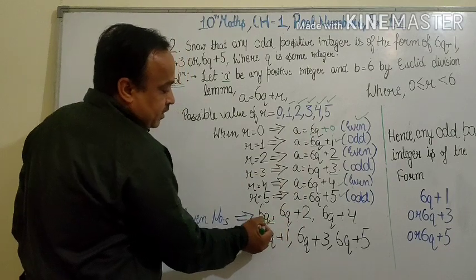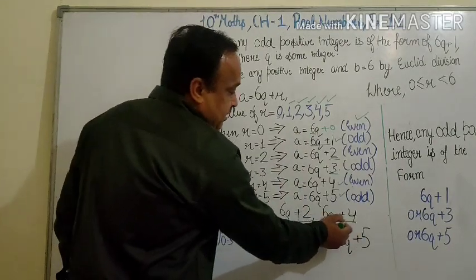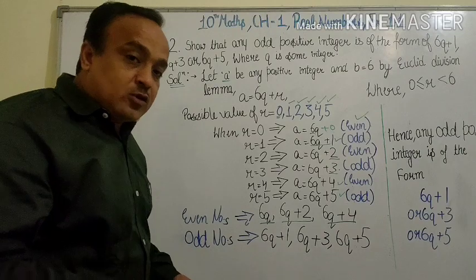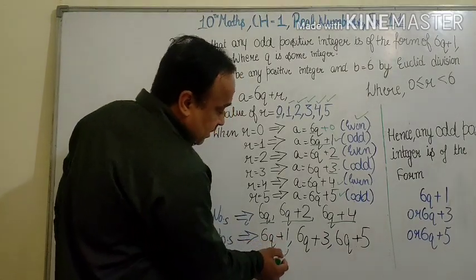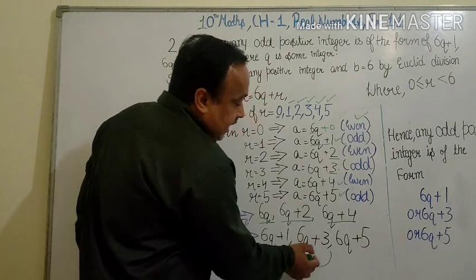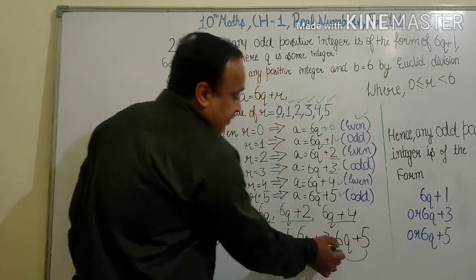The even numbers are 6q, 6q+2, and 6q+4. What are the remaining numbers? The odd numbers are 6q+1, 6q+3, and 6q+5.